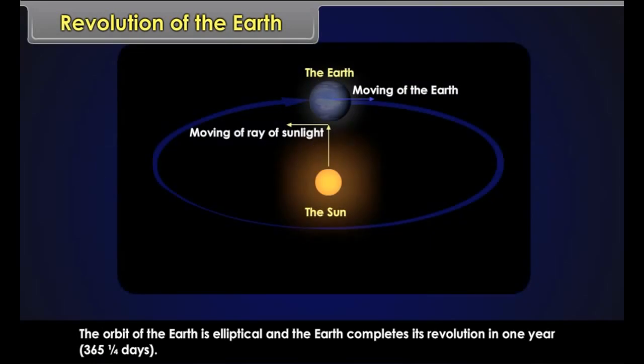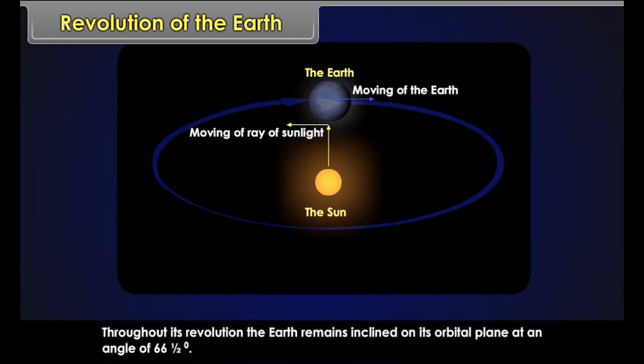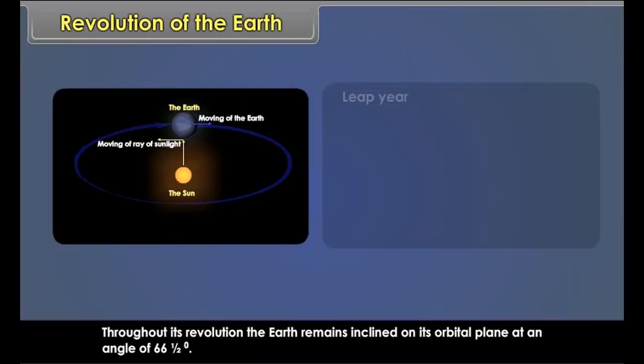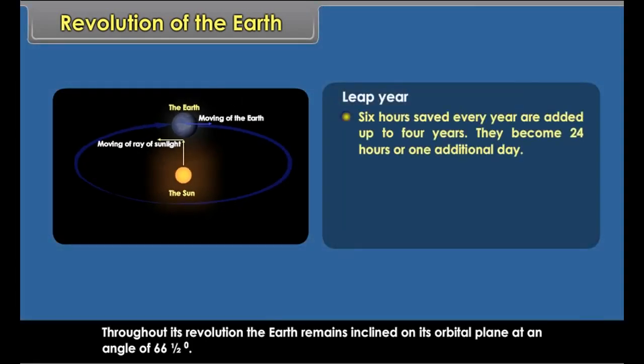Revolution of the Earth. The earth moves around the sun on a fixed path, which is known as the orbit. The orbit of the earth is elliptical and the earth completes its revolution in one year — 365 and one-fourth days. Throughout its revolution, the earth remains inclined on its orbital plane at an angle of 66 and a half degrees.